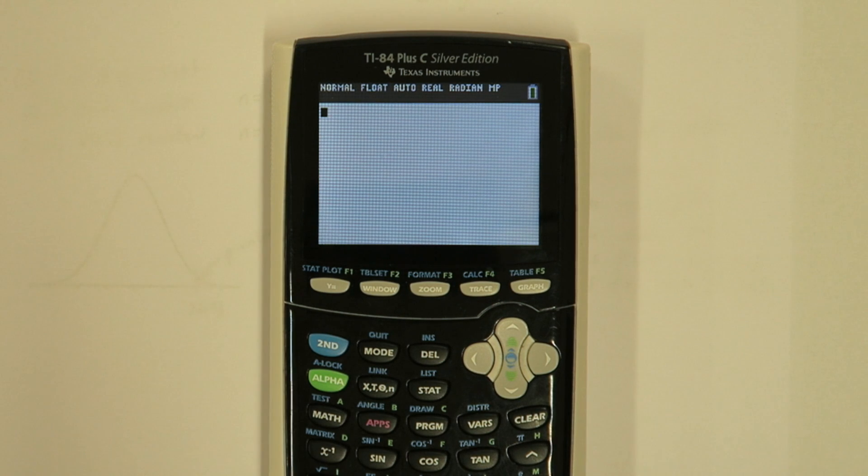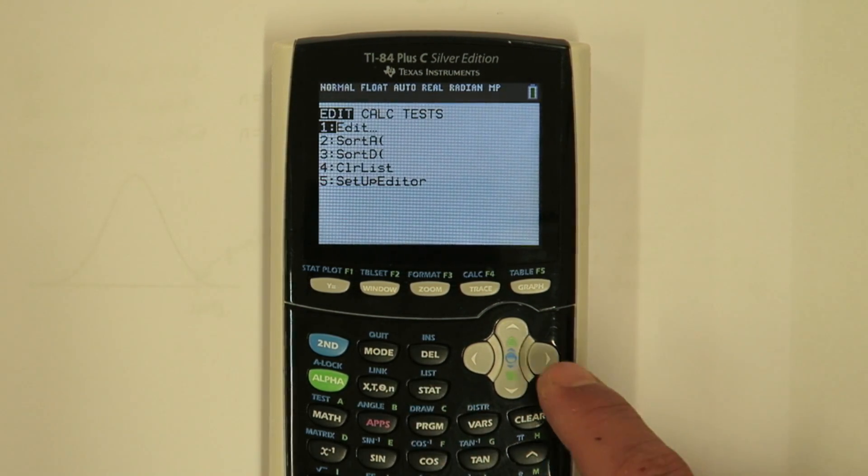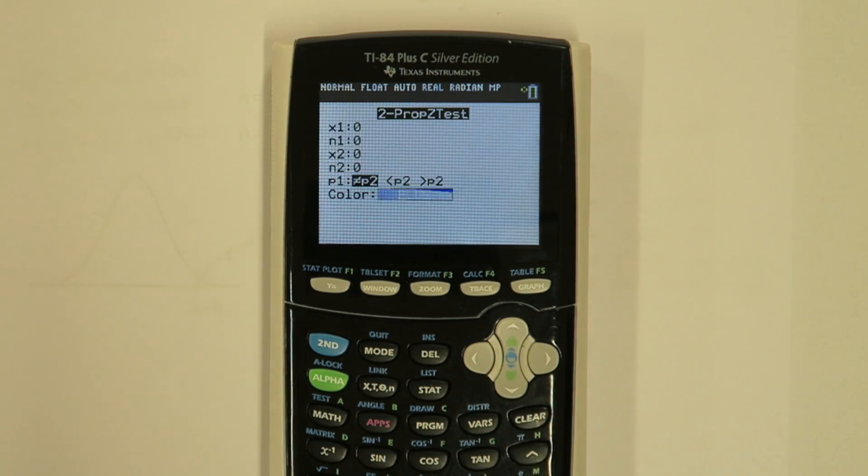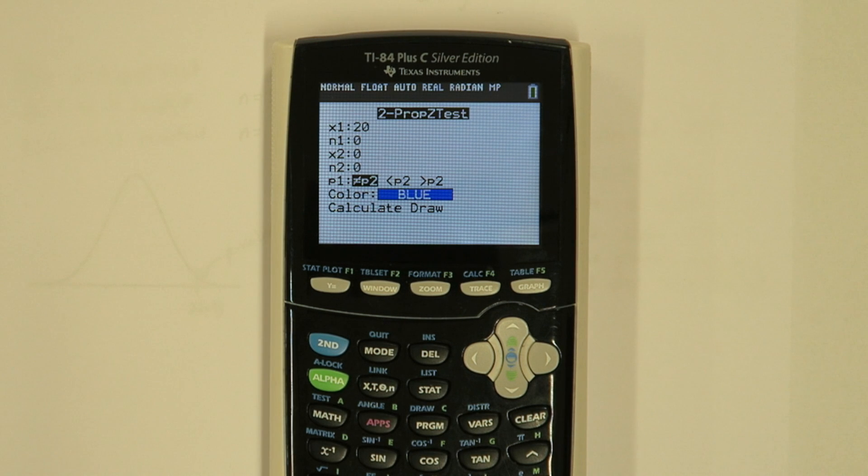To do this on the calculator, press STAT and go over to test. Scroll down to 2-prop Z-test. For X1, put 20 for 2017 successes, and the sample size in 2017 was 52.